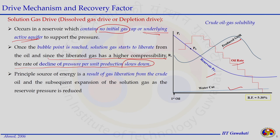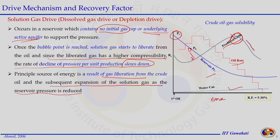Since the liberated gas has higher compressibility, the rate of pressure decline per unit production slows down because the gas supports the pressure. The principal source of energy is gas liberation from the crude oil and subsequent expansion of the solution gas as reservoir pressure is reduced. On a time scale of several months or years, the GOR ratio increases as pressure declines below the bubble point, reaching a maximum value as most gas gets produced.